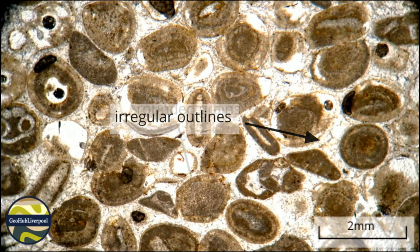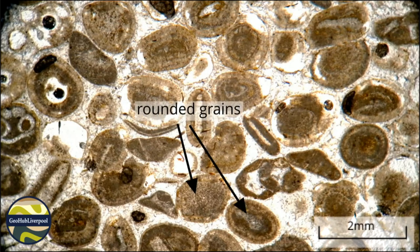Most of the grains are rounded and they are of about the same size — approximately one millimetre in diameter. Many are almost spherical, although some are more elongated.